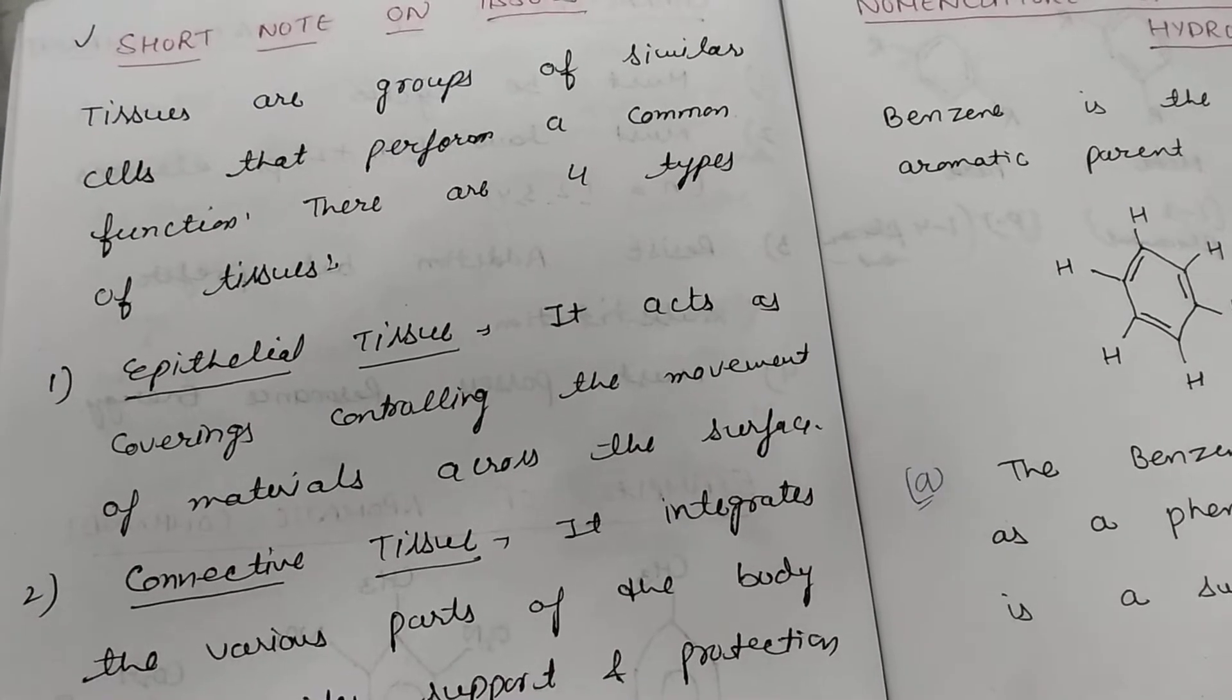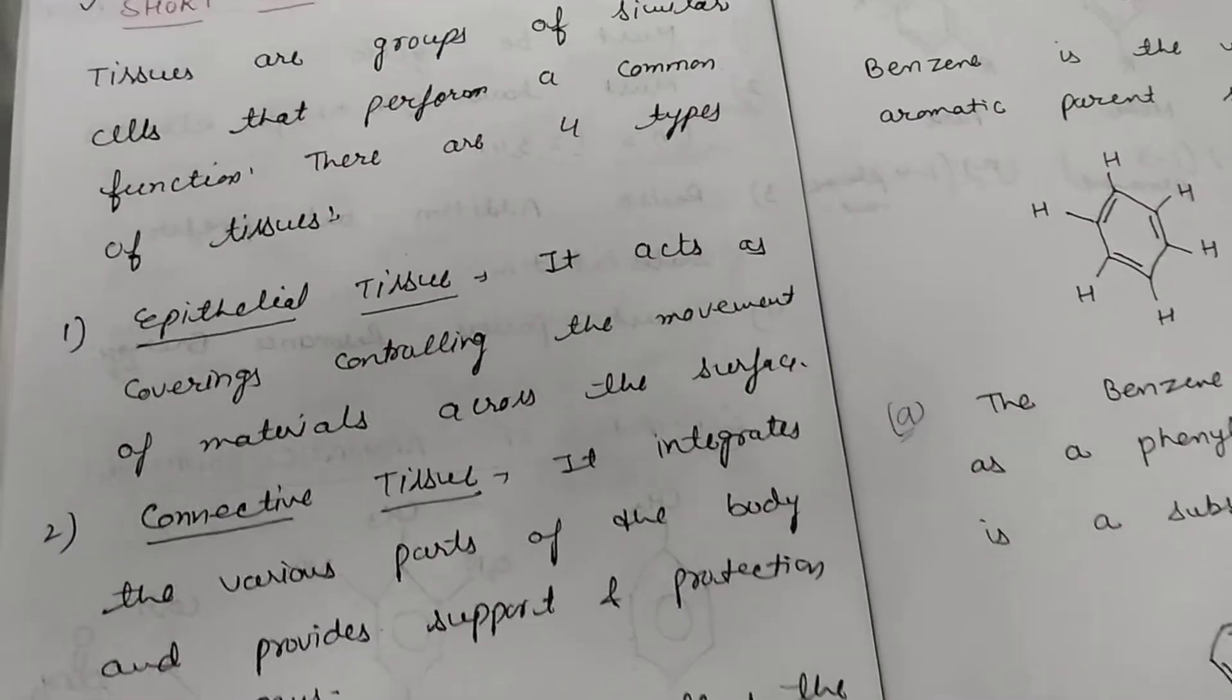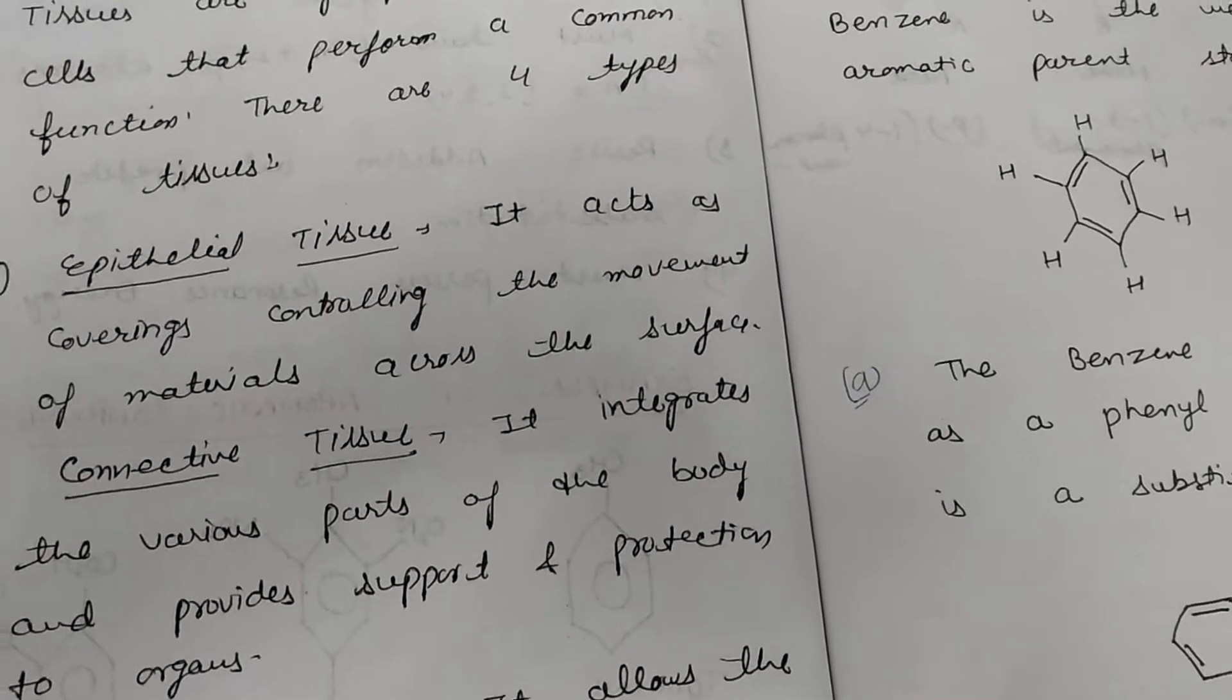What are tissues? Groups of similar cells. When like cells combine, we call them tissue, and they perform a function. So there are four types of tissues.